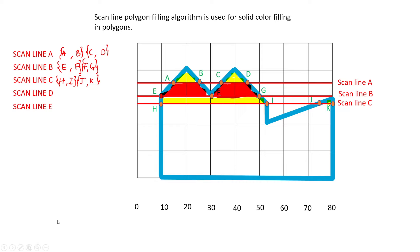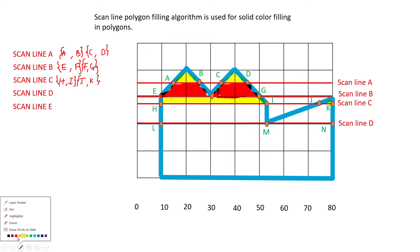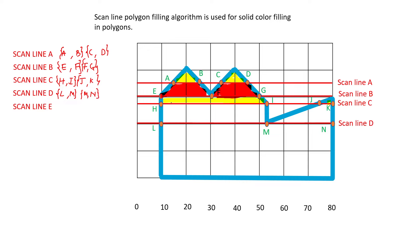Next we have three intersection points: l, m, and n. Point m is a vertex. The two edges connected to m — are they on the same side of the scanline? Yes, both are on the top side. So we count intersection m twice and make pairs: l,m and m,n, and fill in the area between these two pairs.